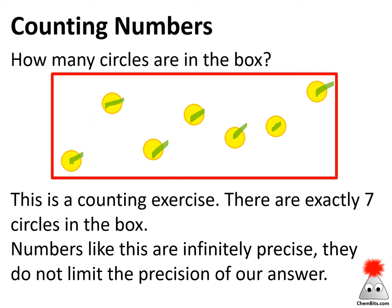It is infinitely precise. I could write this as 7.0000 and keep writing until my arm fell off, and I would still need more zeros. So counting numbers are infinitely precise and do not limit our significant figures because, again, significant figures are communicating precision.